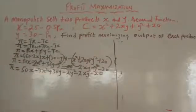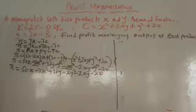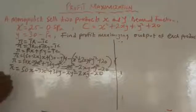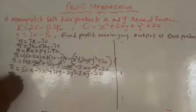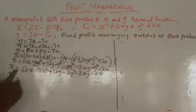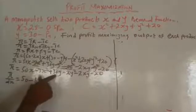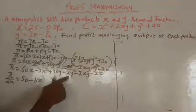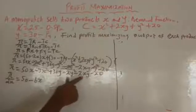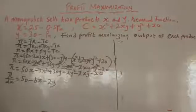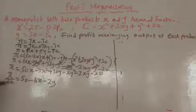This is our profit function. To find the profit-maximizing output, we take the partial derivative with respect to X and the partial derivative with respect to Y. Taking ∂π/∂X: differentiating 50X gives 50; minus 3X squared gives minus 6X; the terms without X are left unchanged; and minus 2XY differentiated with respect to X gives minus 2Y; the constant 20 gives zero. So ∂π/∂X equals 50 minus 6X minus 2Y.